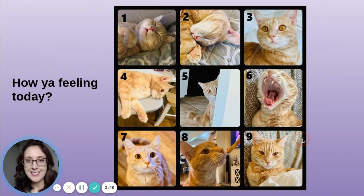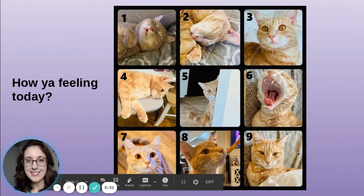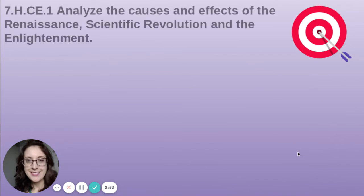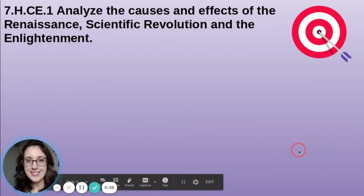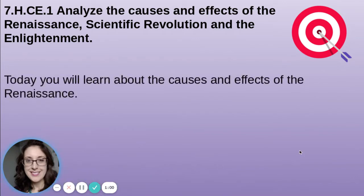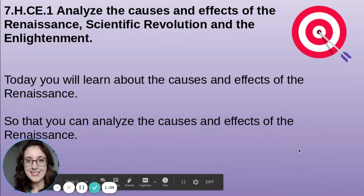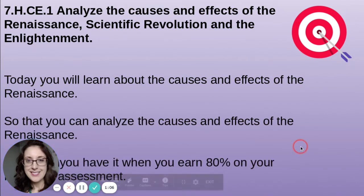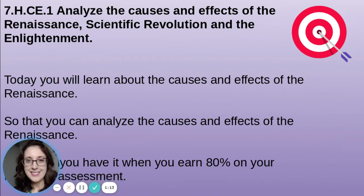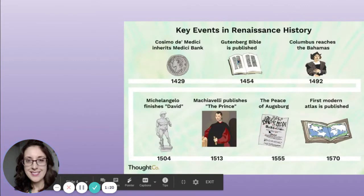We had a cat check-in on how you're feeling today. Our state standards will analyze the cause and effects of the Renaissance, Scientific Revolution, and the Enlightenment. Today you'll learn about the causes and effects of the Renaissance so that you can analyze them. When you're done, you'll have a formative assessment in Google Classroom — five multiple choice questions — and you know you have it when you earn eighty percent or higher.